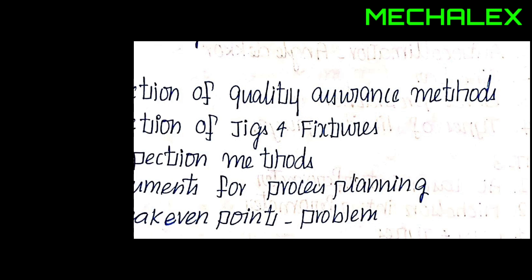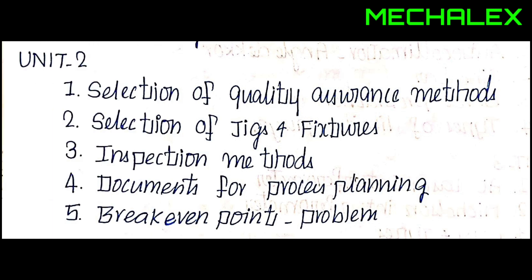Here we have two questions. The first question is selection of quality assurance methods — if you do quality assurance methods, you can apply the same methods. The second question is selection of jigs and fixtures. Jigs and fixtures design is the most important topic in this area.